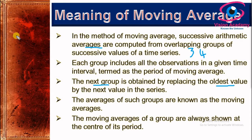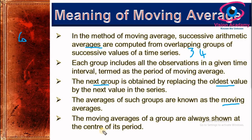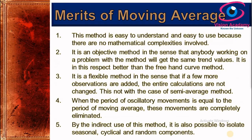For the next group, the oldest value is replaced by the next value in the series. For example, if we have six observations, the first group uses observations one, two, three. The second group discards observation one and considers observations two, three, four. This process continues until all observations are exhausted. We call this moving average because we keep moving by discarding the oldest value each time.